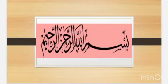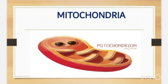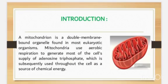Bismillah ar-Rahman ar-Rahim. Assalamu alaikum, hope you all are fine and doing well. Today my topic of presentation is cell organelle mitochondria. Firstly, we will talk about its introduction. A mitochondria is a double membrane bound organelle found in most eukaryotic organisms. Mitochondria use aerobic respiration to generate most of the cell's supply of adenosine triphosphate (ATP).